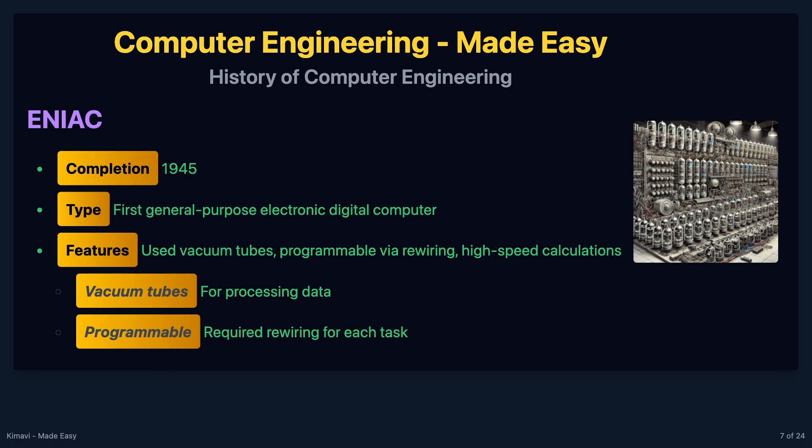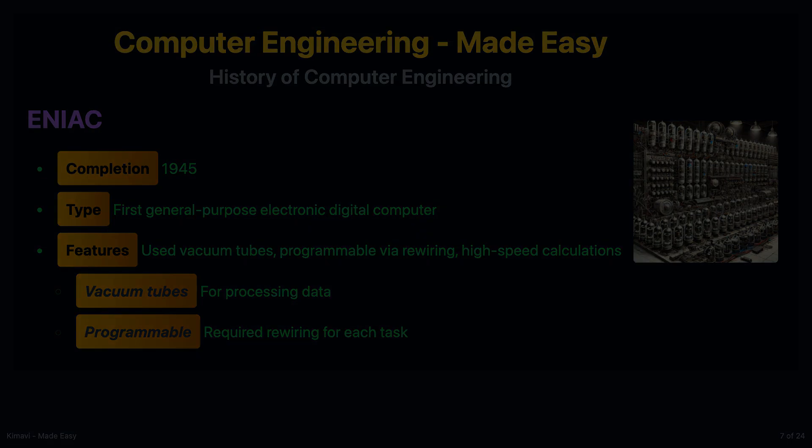The Electronic Numerical Integrator and Computer, or ENIAC, completed in 1945, was the first general-purpose electronic digital computer. It was designed to calculate artillery firing tables for the United States Army. Key features of ENIAC included the use of vacuum tubes for computation, programmability via rewiring, and high-speed calculations.